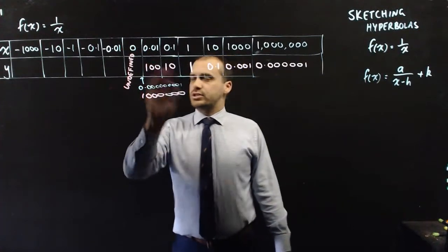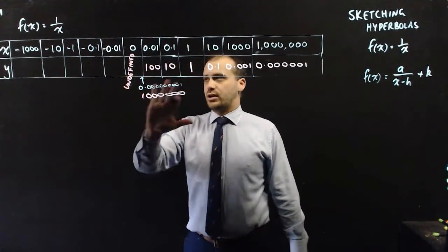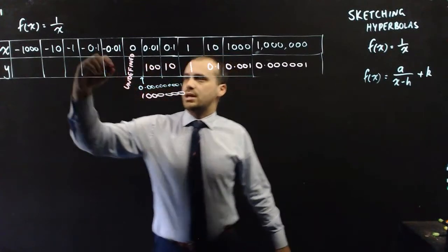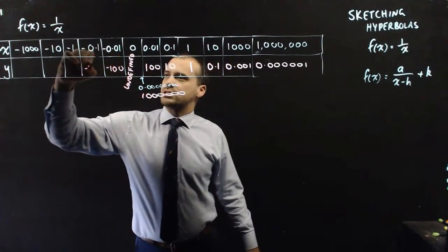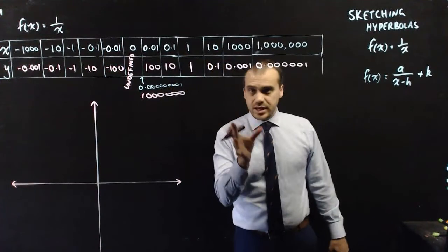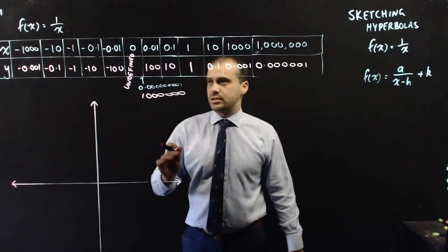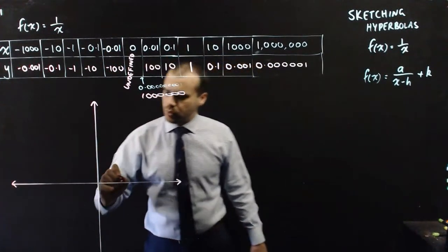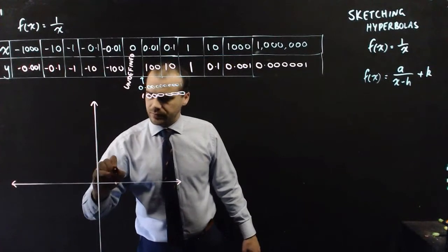All of this just gets flipped over on the other side, except everything's going to be negative. So that's going to be negative 100, negative 10, and so on. Now when we sketch this, we get something fantastic. There's one special point here: (1, 1). I'm just going to put that in there.